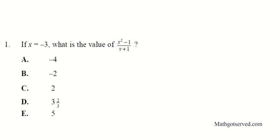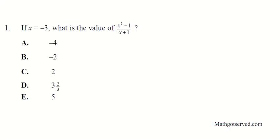Question 1 says: if x is equal to negative 3, what is the value of x squared minus 1 divided by x plus 1? There are two ways of doing this. The first involves just directly substituting and simplifying, and the second method involves reducing and then substituting. I'm going to do both methods for you.